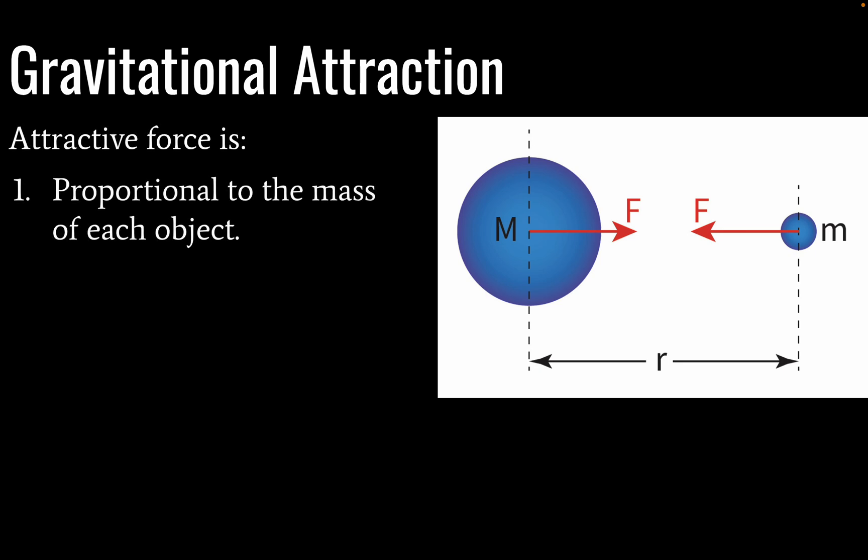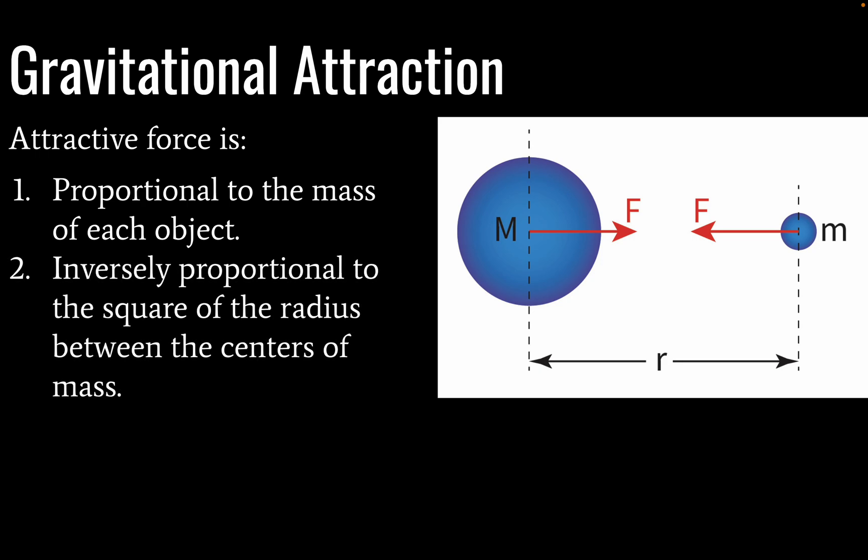The larger their mass, the more gravitation. The magnitude of force will depend on three factors, one of which I've already hinted at. The first one is mass. So our attractive force is proportional to the mass of each object, meaning the larger the mass, the greater the gravitational force.